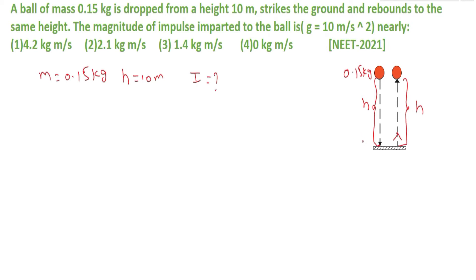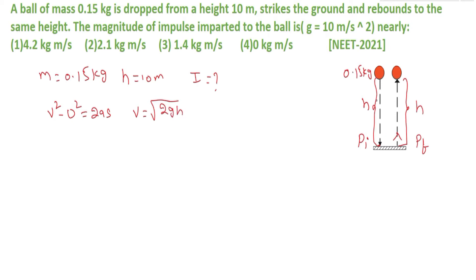Let me take the initial momentum before hitting the ground as P_I, and the final momentum after rebounding as P_F. For a freely falling body, using v² − u² = 2as, the velocity after traveling a distance H is v = √(2gH).